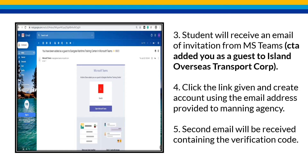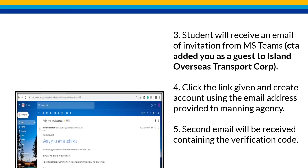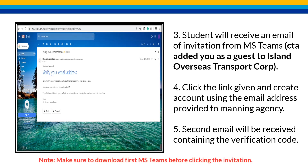Students will receive an email invitation from MS Teams when the CTA adds you as a guest to Island Overseas Transport Corporation. Click the link given and create an account using the email address provided to the manning agency. A second email will be received containing the verification code. Make sure to download MS Teams before clicking the invitation.